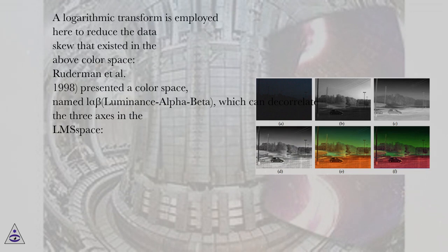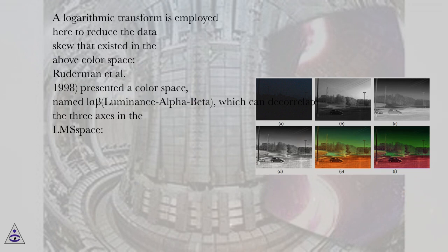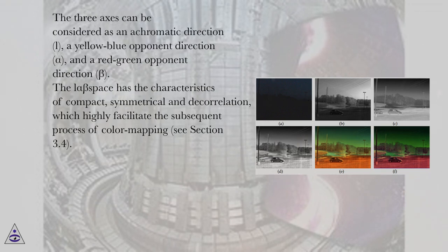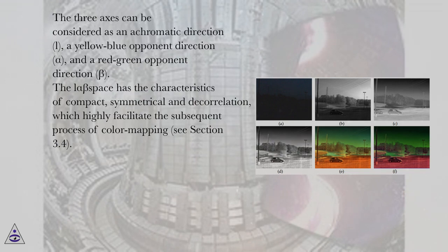A logarithmic transform is employed to reduce the data skew that existed in the above color space. Ruderman et al. (1998) presented a color space named L-alpha-beta (luminance-alpha-beta), which can decorrelate the three axes in the LMS space. The three axes can be considered as an achromatic direction L, a yellow-blue opponent direction alpha, and a red-green opponent direction beta. The L-alpha-beta space has the characteristics of being compact, symmetrical, and decorrelated, which highly facilitate the subsequent process of color mapping.